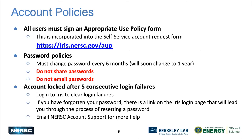All users must sign an appropriate use policy form. This is currently integrated into the account request process, so when you fill out a form to request an account, before you submit it you'll be shown the appropriate use policies and you have to agree to them, click on a CAPTCHA — one of those things that proves you're not a robot. You can also go back and look at the actual policies at iris.nersc.gov/aup.